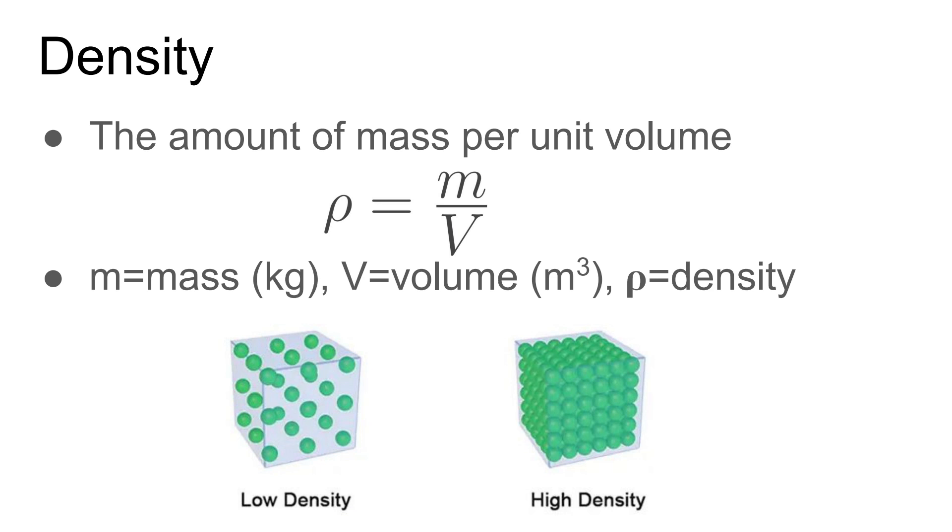One important equation we're going to be using is density. I know you did this in chemistry a lot but just a quick reminder. Density is mass divided by volume. If you look at a low density, you have maybe a certain amount of atoms here. A higher density substance has much more atoms in the same amount of space or volume. The units we use: our standard units for mass are going to be kilograms. Standard units for volume are going to be meters cubed. So density therefore would be kilograms per meter cubed.